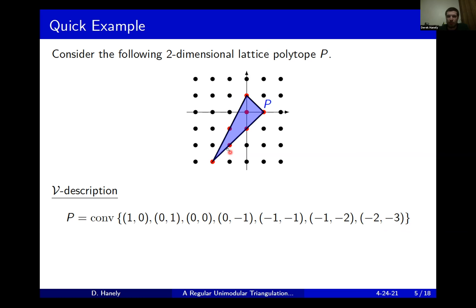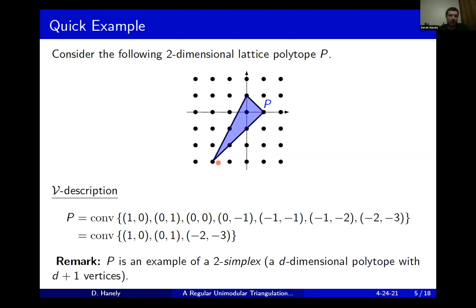We see that some of these points we really don't need to include — for example, the origin or any of the points on the boundary edges. So instead, we could just define this as the convex hull of the extreme points, which we refer to as the vertices. In this case, the vertices are the two standard basis vectors and the point negative two, negative three. This is an example of a lattice polytope, and furthermore it is called a simplex — in this case a two-simplex, because we're in two dimensions.